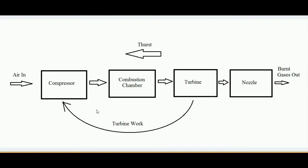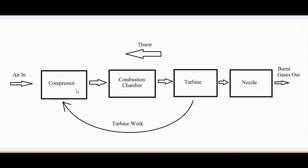Now let's see the circuit diagram of a jet engine. It is composed of four basic components in serial fashion: the compressor, then the combustion chamber, then the turbine, and then the nozzle — all arranged as shown in the diagram.